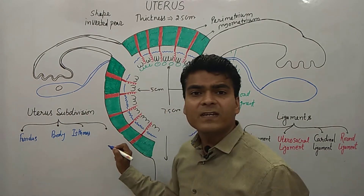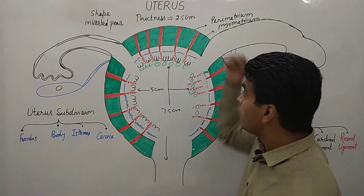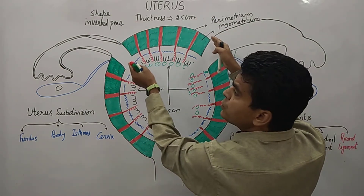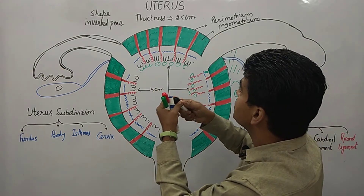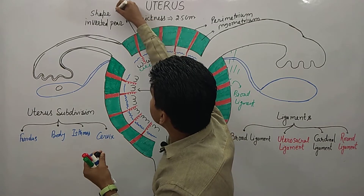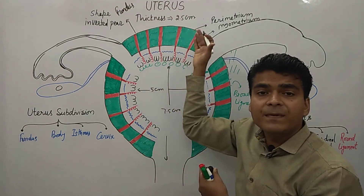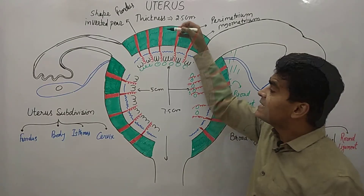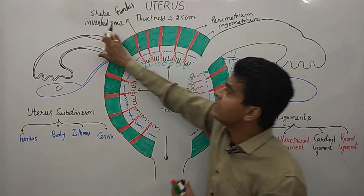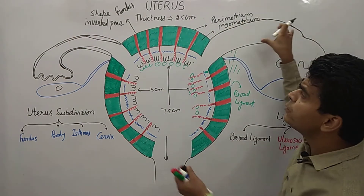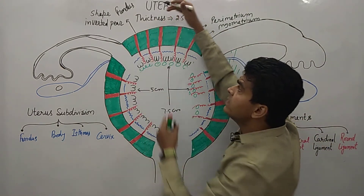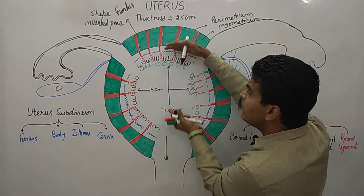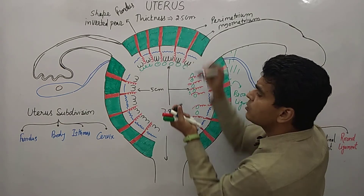The uppermost portion is known as the fundus — the superior portion is called the fundus. As you can see in the diagram I am showing, the fundus is the portion superior to the uterine tube. The second portion is the body — the middle, central portion of the uterus is called the body.